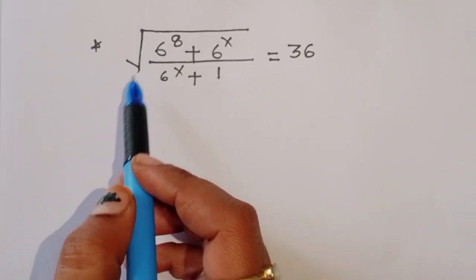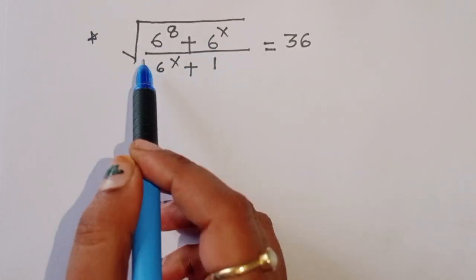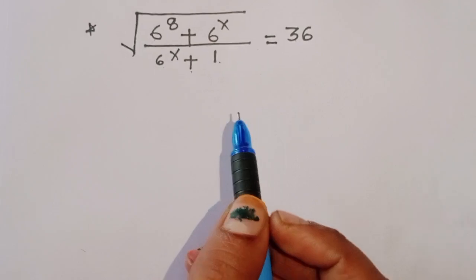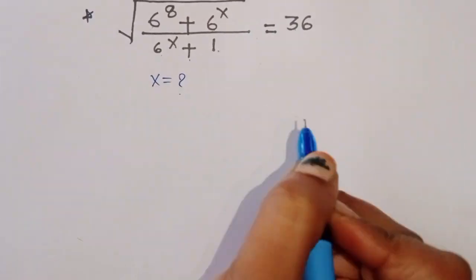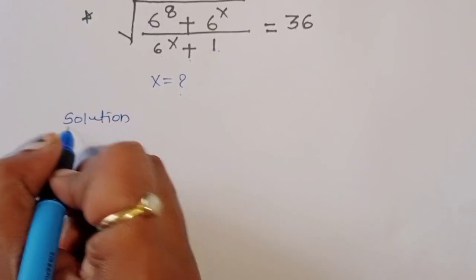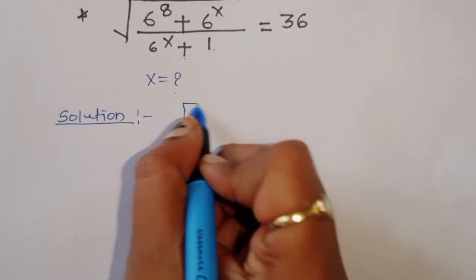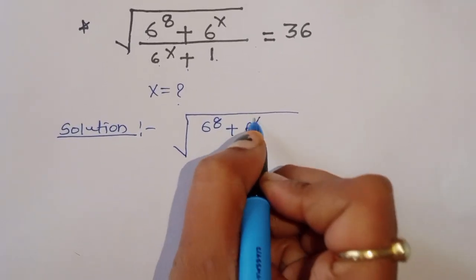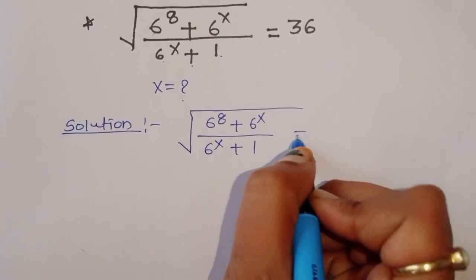The question is: given the square root of 6 raised to 8 plus 6 raised to x, divided by 6 raised to x plus 1, is equal to 36, and we have to find out the value of x. Now let's start the solution.